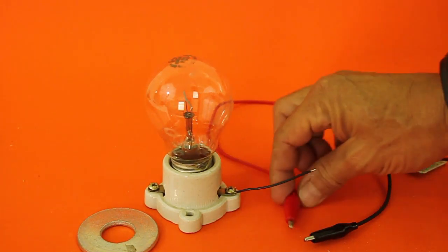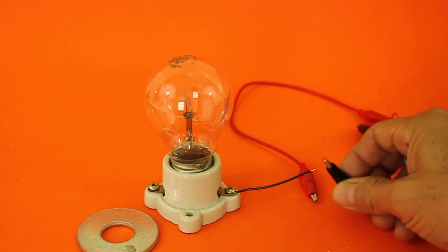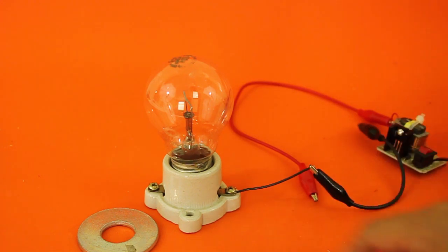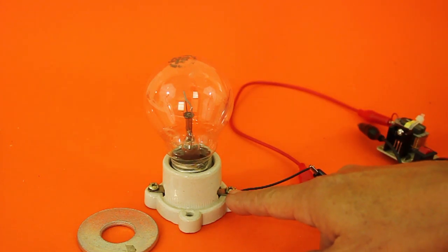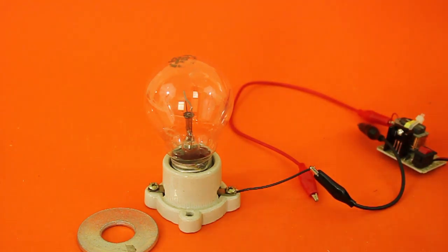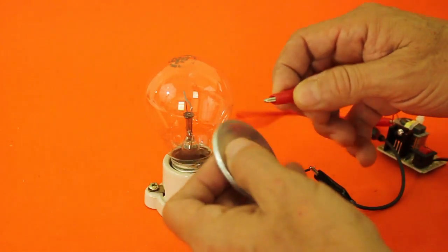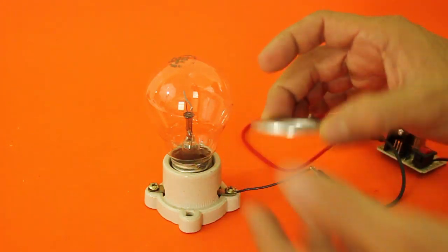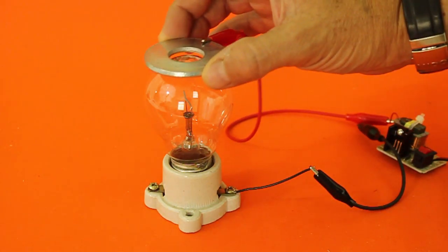The high voltage output on the other side is connected to our alligator clips. One of the high voltage terminals is connected to one of the terminals of the lamp. It doesn't matter which one because we have AC, and the other is connected to the metal washer and you simply put it atop the lamp.